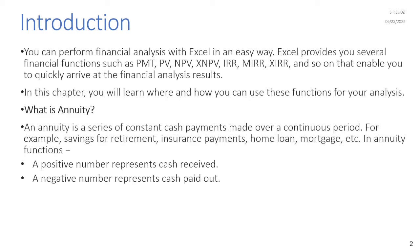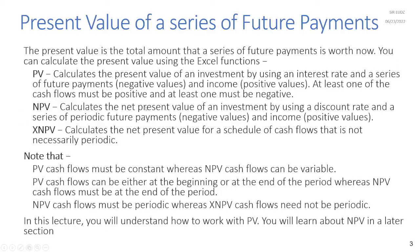In this lecture you will learn where and how you can use these functions for your analysis. First, what is an annuity? An annuity is a series of constant cash payments made over a continuous period — for example, savings for retirement, insurance payments, or home loan mortgages. In annuity functions, a positive number represents cash received and a negative number represents cash paid out.